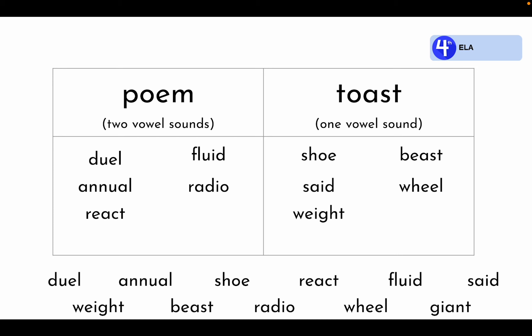And finally, the word giant. Yes, it belongs under poem. The i and a are not working together — they are making their own separate vowel sounds. Gi-ant. Giant. Great job sorting these words as we work to decode the two different VV syllable division patterns.